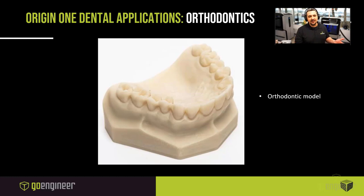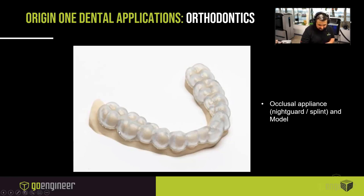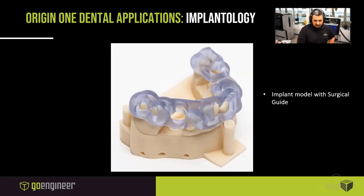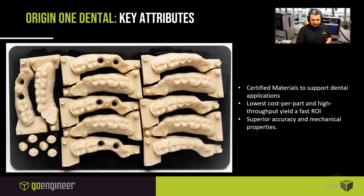Here are some models printed on the Origin One Dental system: an occlusal appliance night guard splint with model — you can see the support nubs at the base — an implant model with surgical guide printed in KeyGuide, which is strong, fully biocompatible, easy to polish, and autoclavable, plus full arch models, quadrant models, and removable dies. The key attributes are certified materials for dental applications, the lowest cost per part, highest throughput yield with a fast ROI, and superior accuracy and mechanical properties.